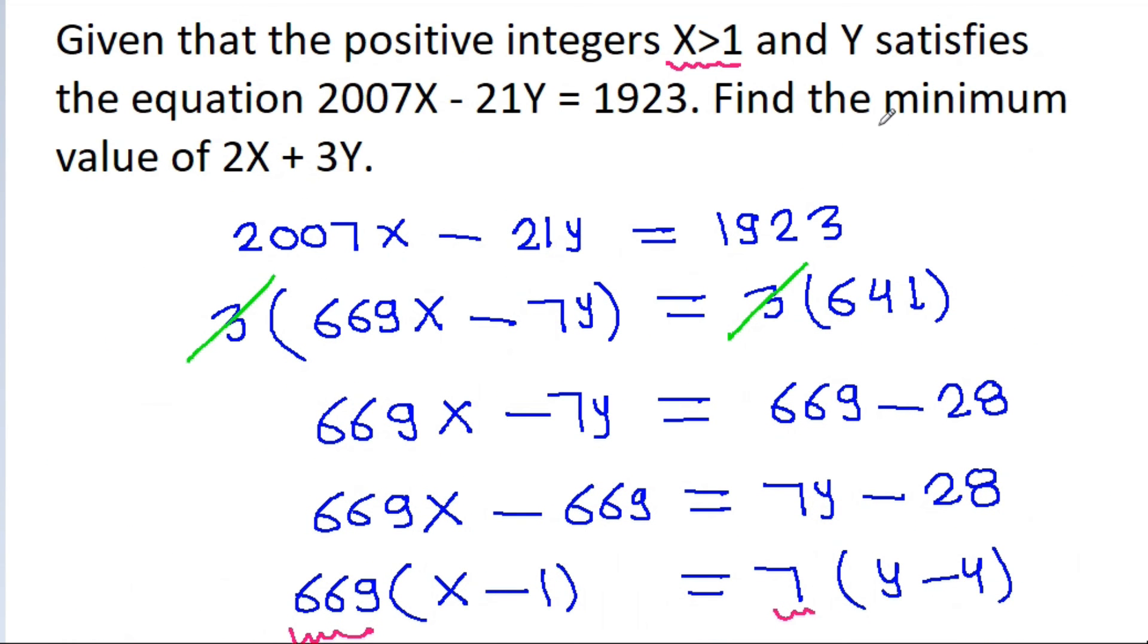So the minimum value of 2x plus 3y is 2035.